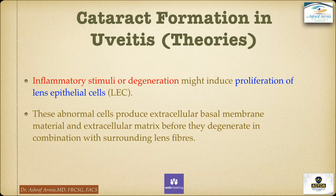There are many theories regarding cataract formation in uveitis. Inflammatory stimuli or degeneration might induce proliferation of the lens epithelial cells. These abnormal cells produce an extracellular basal membrane material and extracellular matrix before they degenerate in combination with surrounding lens fibers.